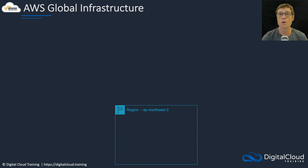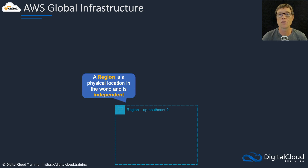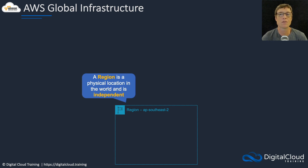The first concept to understand is a region. A region is a physical location in the world, and regions are independent from each other and they're geographically distant from each other as well.